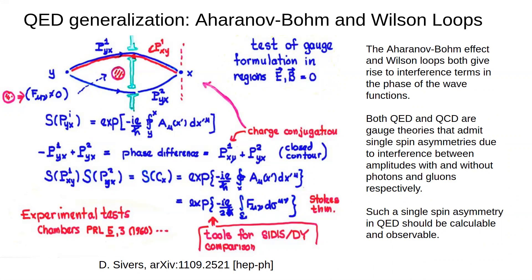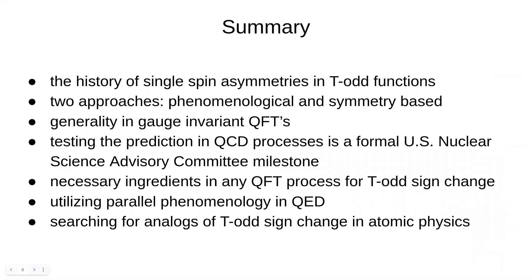Such a single spin asymmetry in QED should be both calculable and observable. Here is a brief summary of this talk. Thank you for your time.